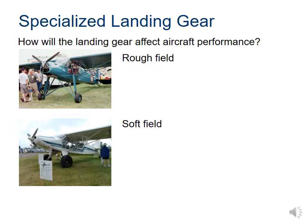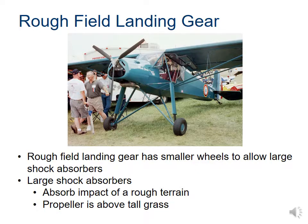There is also specialized landing gear: rough field and soft field configurations. Rough field gear has smaller wheels allowing for larger shock absorbers — the gear is very tall so the propeller clears tall grass or obstructions, such as on the savannah, absorbing impact on rough terrain while keeping the propeller above the vegetation. Soft field gear has large wheels to minimize sinking into terrain like permafrost in the Arctic or Alaska.